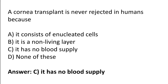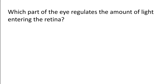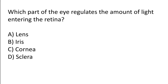Which part of the eye regulates the amount of light entering the retina? Options: lens, iris, cornea, or sclera. The correct answer is option B — the iris is the part of the eye that regulates the amount of light entering the retina.